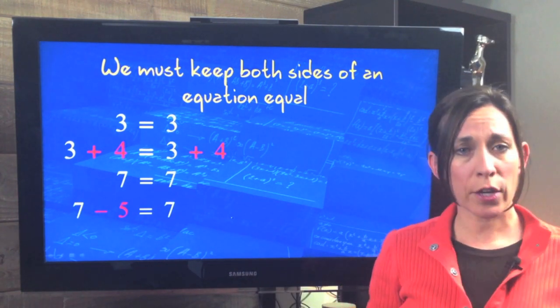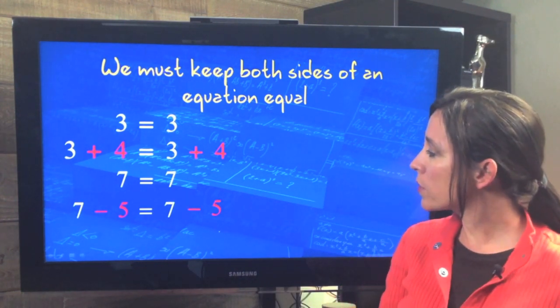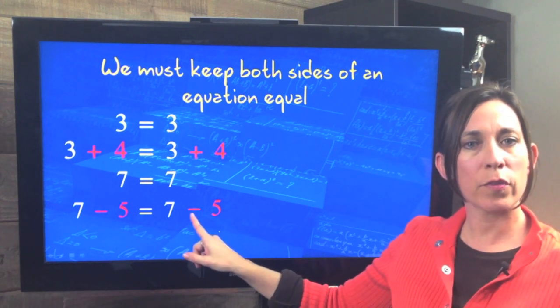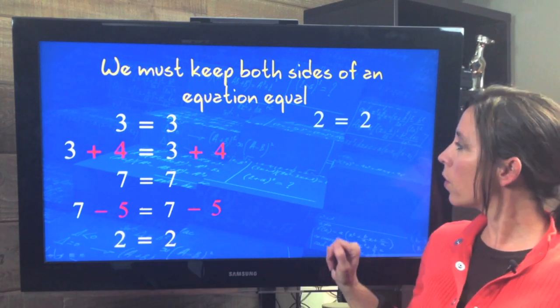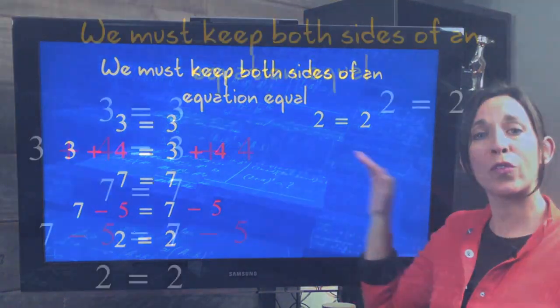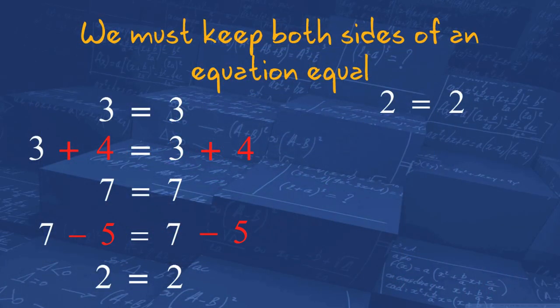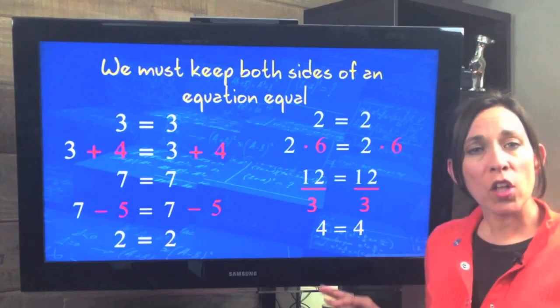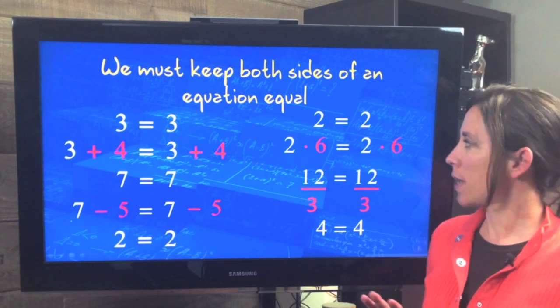It also works for subtraction. If you subtract 5 from the left, we also have to subtract 5 from the right, therefore it stays equal. And it works for addition and subtraction, but also for multiplication and division. If we multiply both sides by 6, we get 12 equals 12. Divide both sides by 3, we get 4 equals 4. So as long as we maintain the inequality, we're safe.